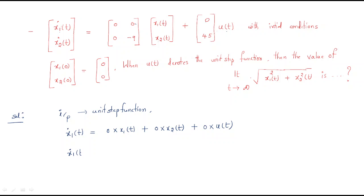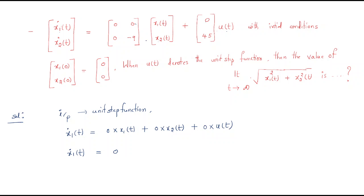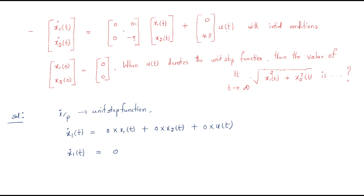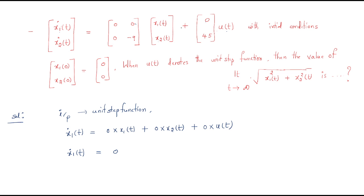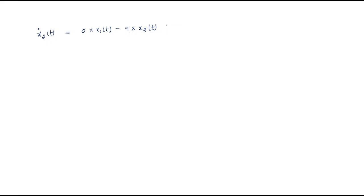Writing out the equations: x1-dot = 0·x1 + 0·x2 = 0, so x1(t) = 0. For x2-dot: x2-dot = 0·x1 - 9·x2 + 45·u(t), which simplifies to x2-dot = -9·x2 + 45·u(t).